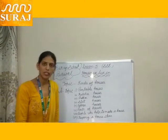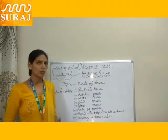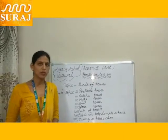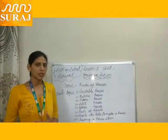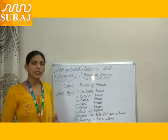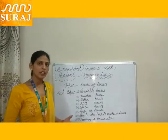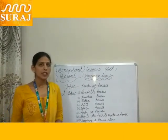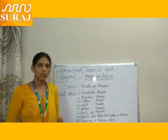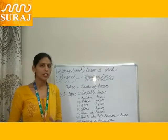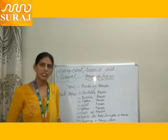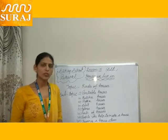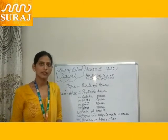Kacha houses are made of mud, wood, bamboo, straw, and clay. They are temporary. They can be broken down and rebuilt easily. They are also called huts.